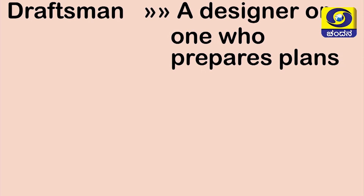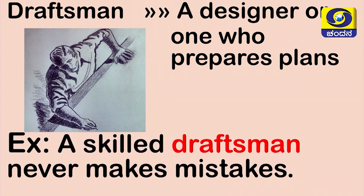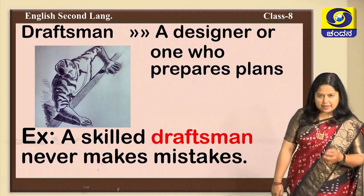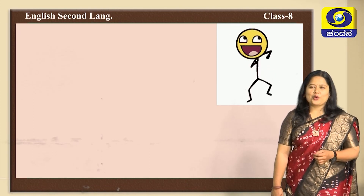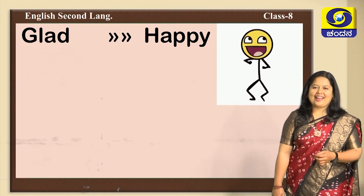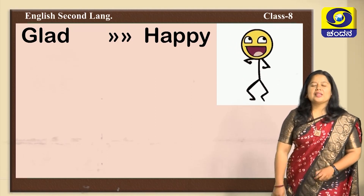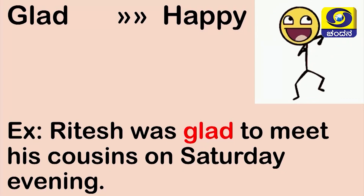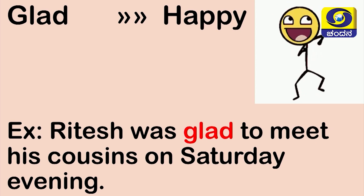The next word is 'draftsman' — a designer or one who prepares plans; a man who plans and designs. Example: 'A skilled draftsman never makes mistakes.' Coming to the next word — 'glad' means being happy. Example sentence: 'Ritesh was glad to meet his cousins on Saturday evening.'